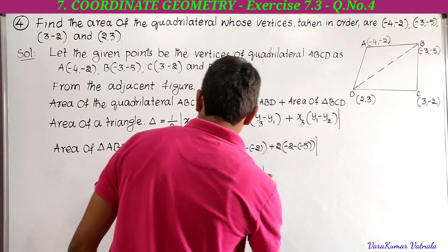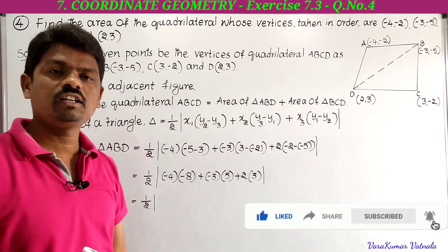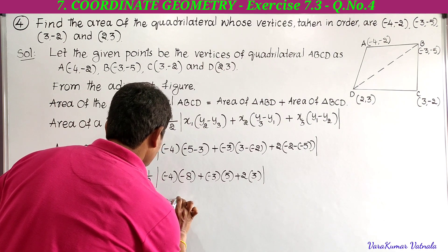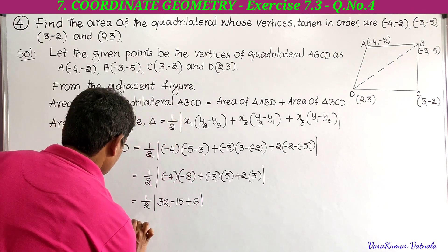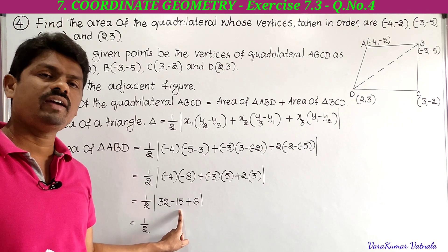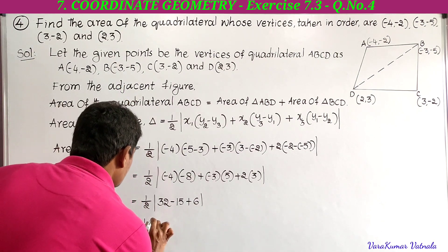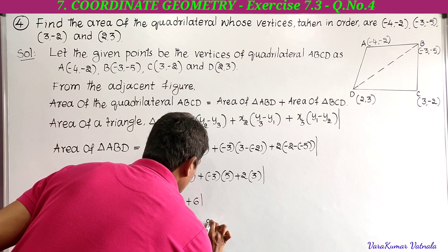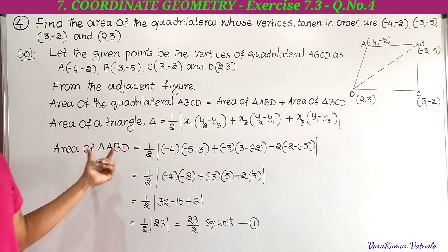Simplifying: half into modulus of minus 4 into minus 8 equals plus 32; minus 3 into 5 equals minus 15; 2 into 3 equals plus 6. So we have half into modulus of 32 minus 15 plus 6. That is 32 minus 15 equals 17; 17 plus 6 equals 23. So the area of triangle ABD is 23 by 2 square units. This is equation number 1.